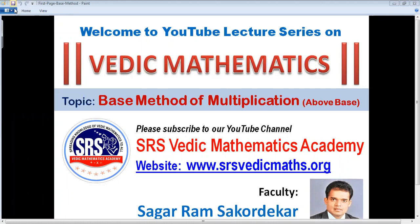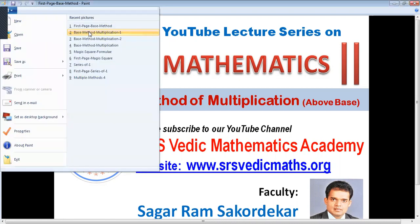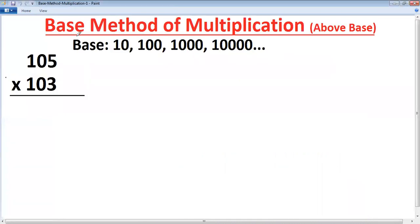Let's learn base method of multiplication. Note that we have to use base method of multiplication when both numbers which are multiplying are near to the same base. Base refers to 10, 100, 1000, 10,000 and so on. 1 followed by 0s.